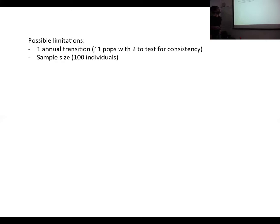Now I'll talk about some limitations and issues for discussion. One limitation is that we only have one annual transition per population, which might not be very representative, but we more than compensate by having many populations. We have to be aware of this temporal limitation — we cannot do stochastic demography. I'm also not sure about sample size; having around 100 individuals is probably good enough for IPMs, but I'd like your opinion.